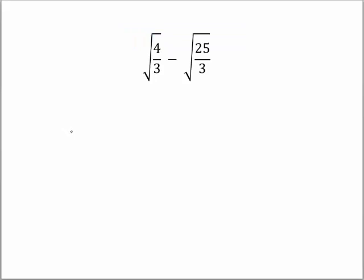Here is a radical that has a fraction underneath it. Our roots are the same — they're both square roots. But now we've got a fraction underneath the radical. If you remember from the earlier video, we had to get rid of the radical in the denominator. Let's rewrite this as the square root of 4 over the square root of 3.